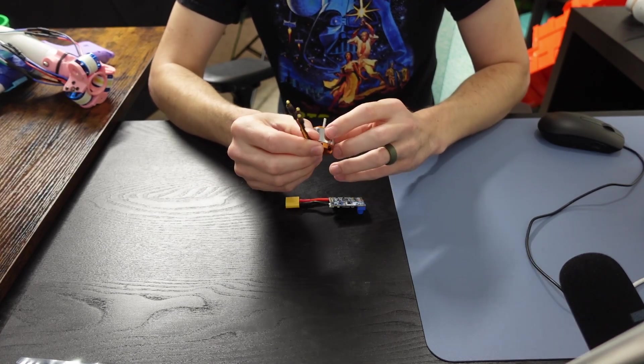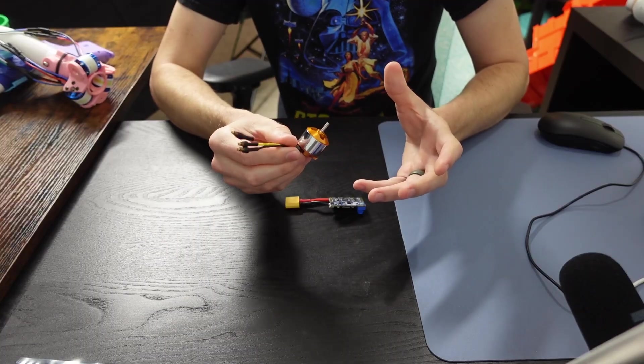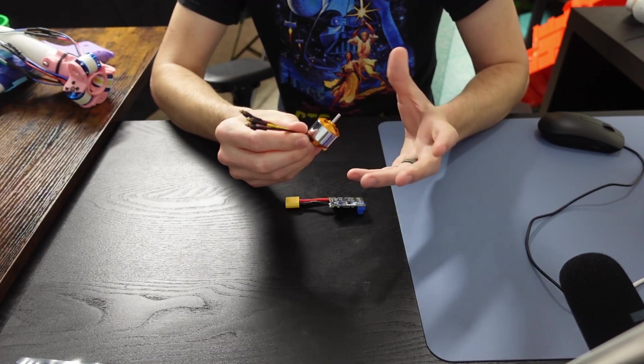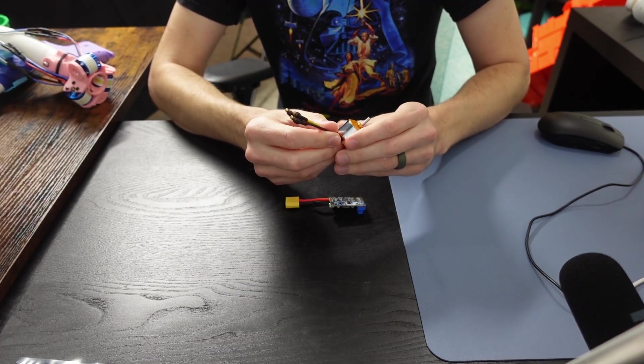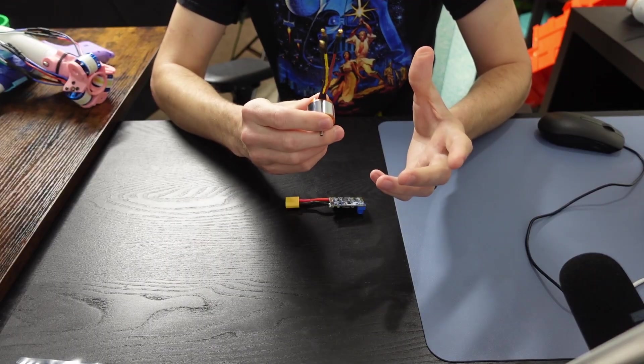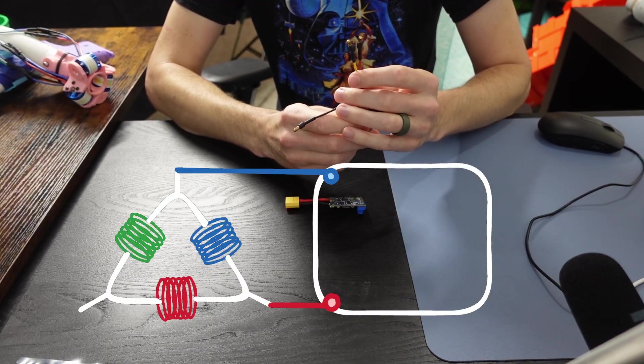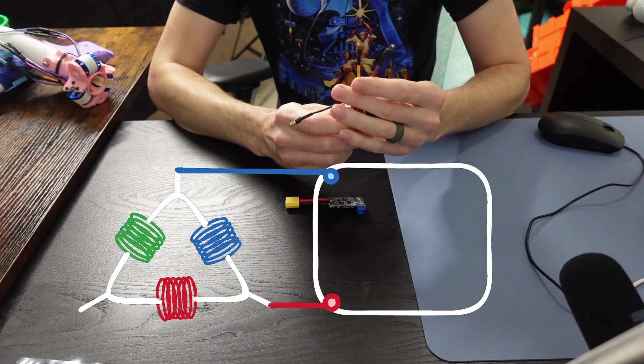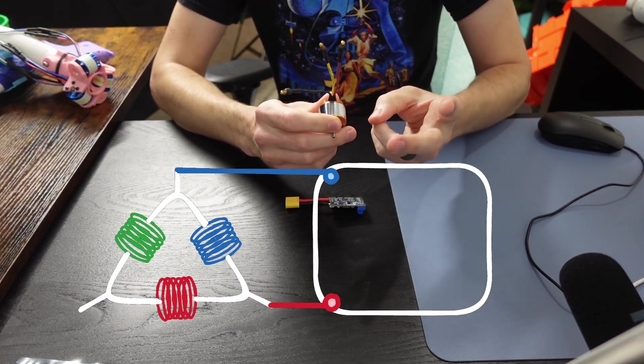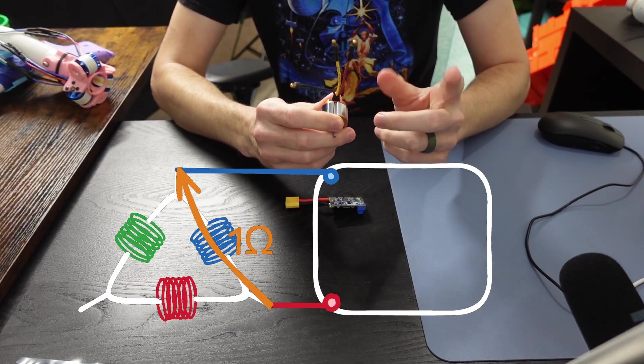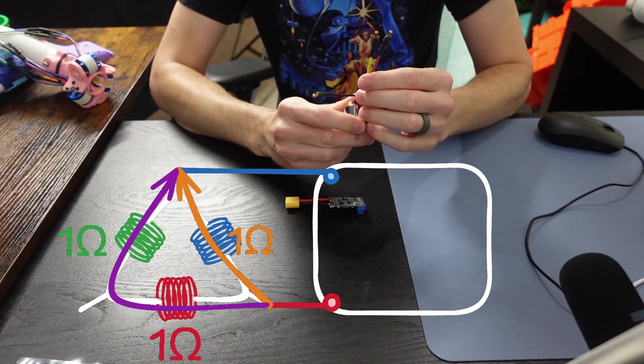And really the only difference is with these measurements, we're going to multiply by 1.5 instead of dividing them by two like we did before. Don't ask me why. It's because in the delta configuration, when we measure across two phase wires using a multimeter, we're actually measuring across two parallel paths, one of which is what we want to measure. The other is two phases in series.